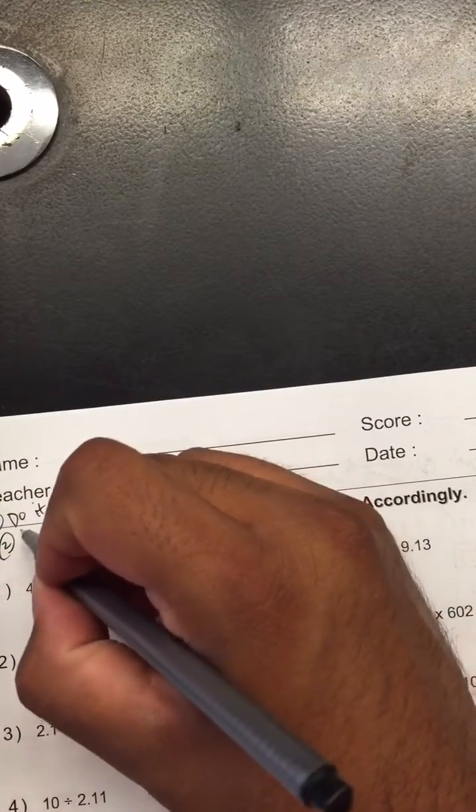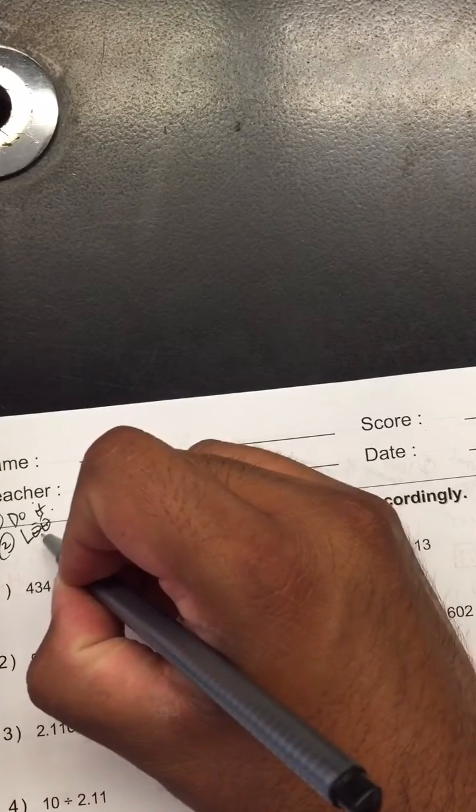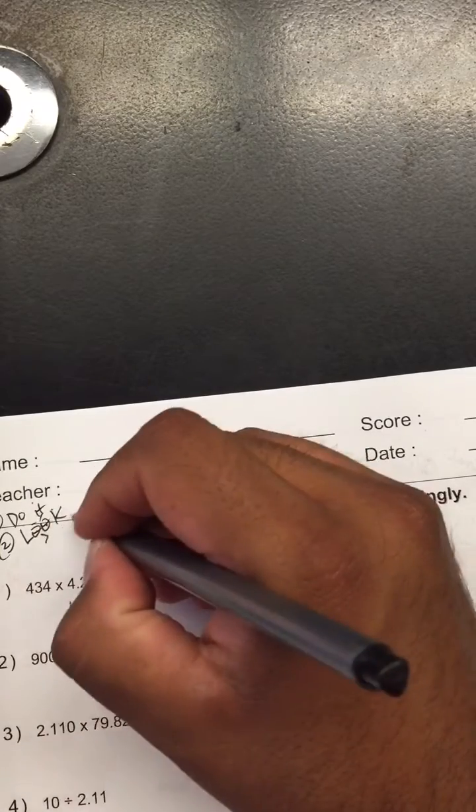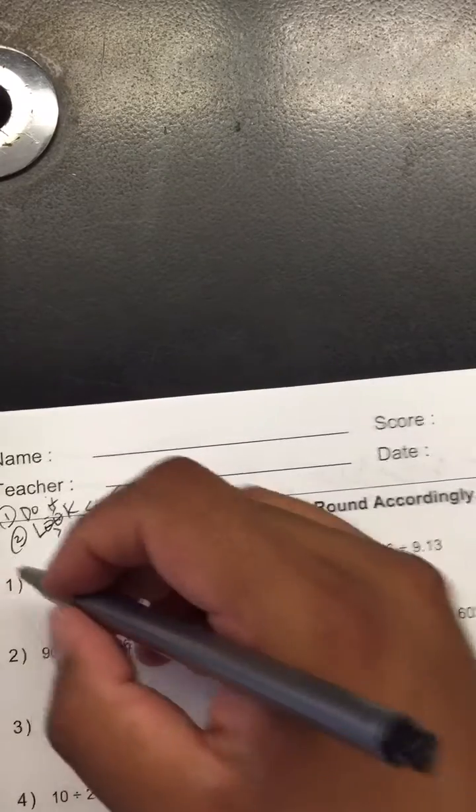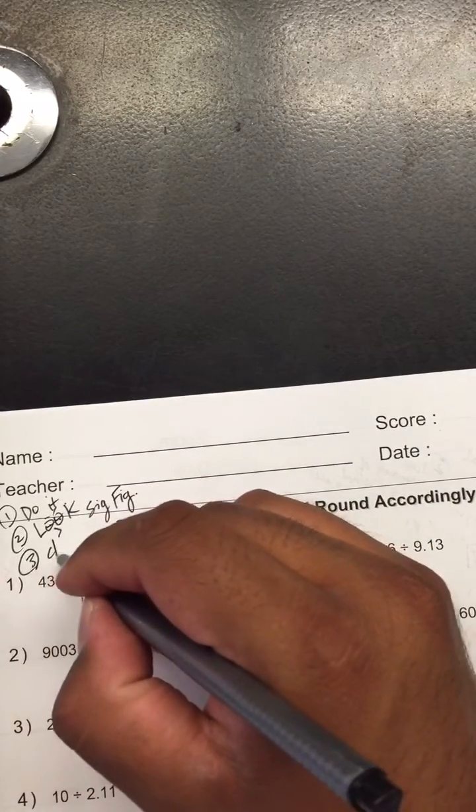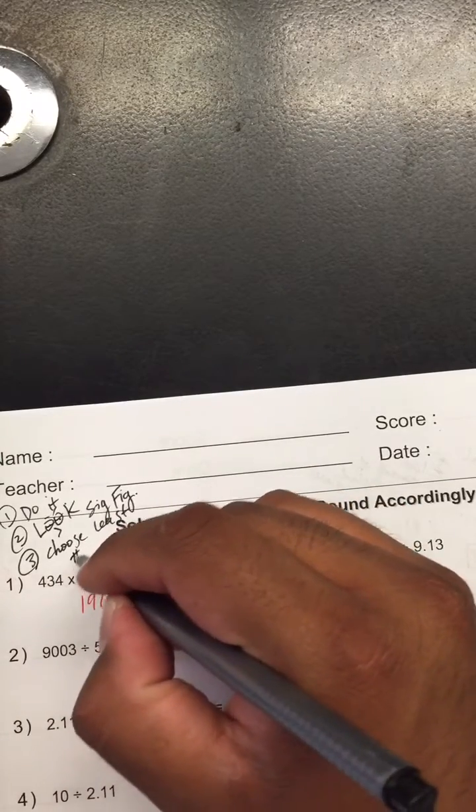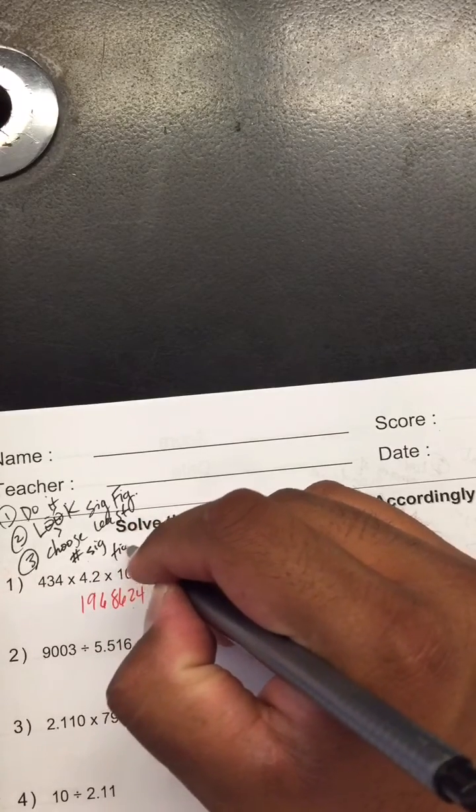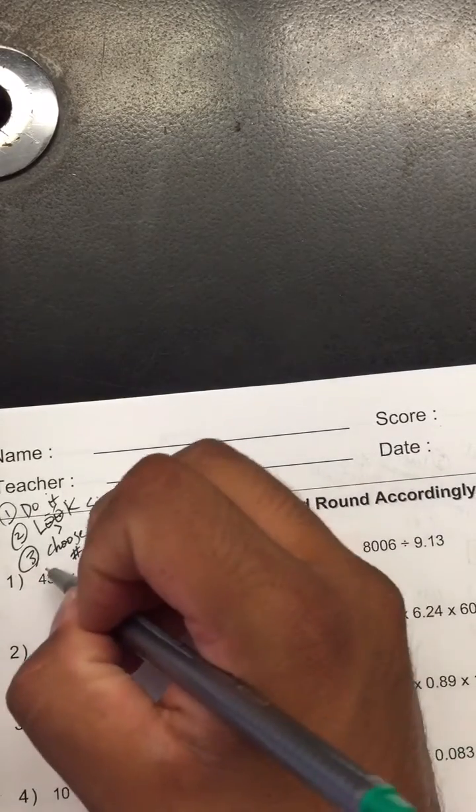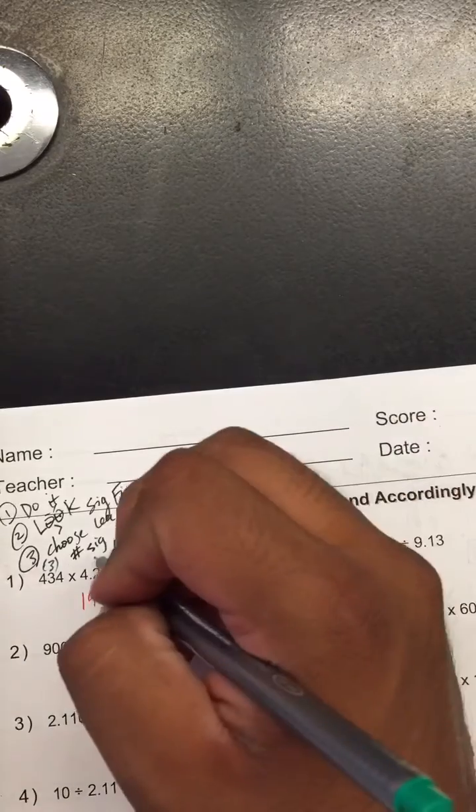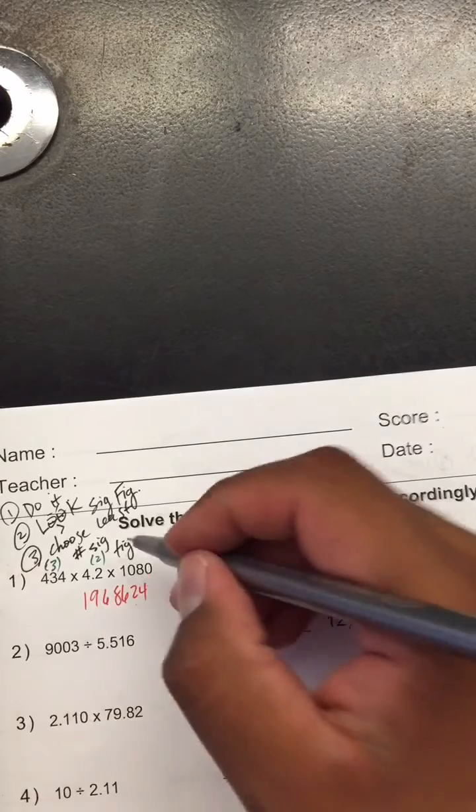The next thing we're gonna do here, since we're multiplying and dividing, we're gonna look for significant figures. We're gonna look for sig figs and then once we find the number of sig figs, we're gonna choose the least number of sig figs and that's where we're gonna round. So here, if you notice, this one right here has three because they're all non-zeros. This one has two, and three.